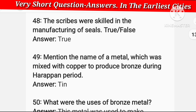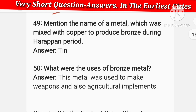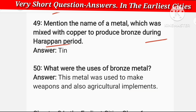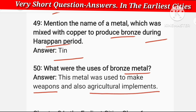The scribes were skilled in the manufacturing of seals — this is true. Name a metal which was mixed with copper to produce bronze during the Harappan period. That metal was tin.